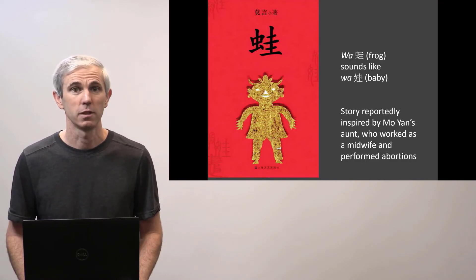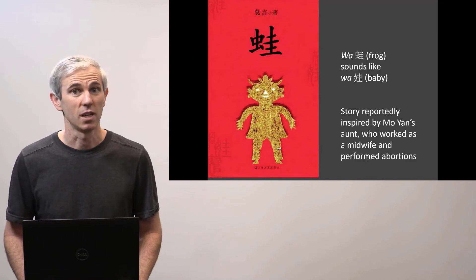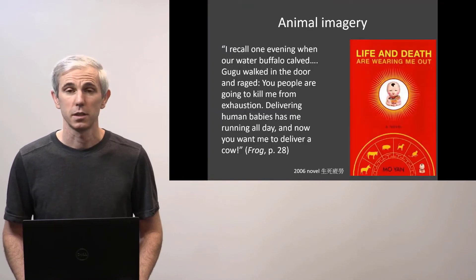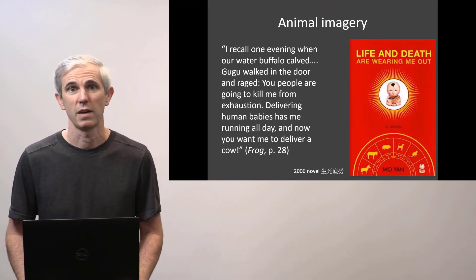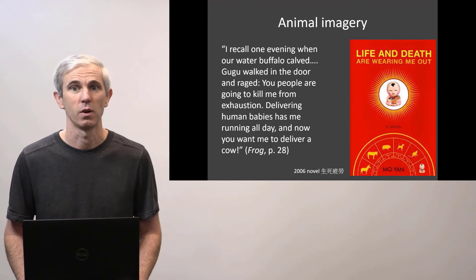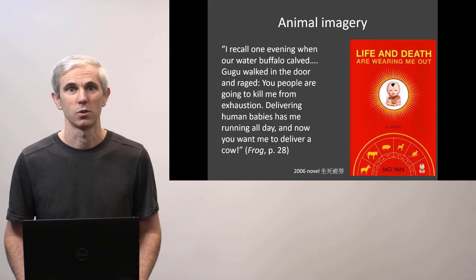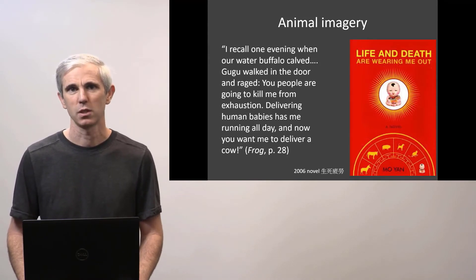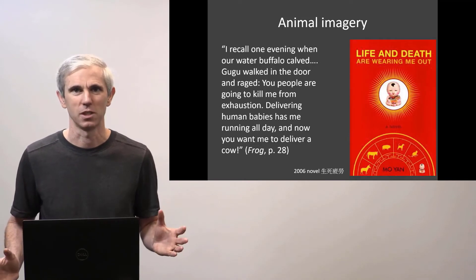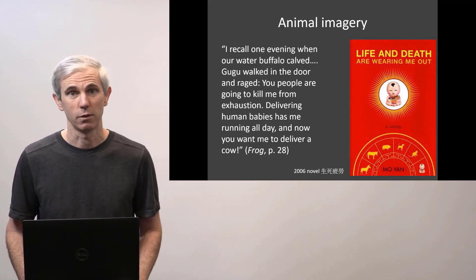Hua, the Chinese title of the novel, is a homophone for the word for infant or baby, and Moyen makes a lot of this sonic resemblance. This is by no means Moyen's first novel to focus on animals — we have that in Red Sorghum, and very prominently in Life and Death Are Wearing Me Out. Within Frog, we don't just have frogs; we also have mules, water buffalo, and all types of creatures. This is part of Moyen's menagerie, you could say — a menagerie that runs through many different works.